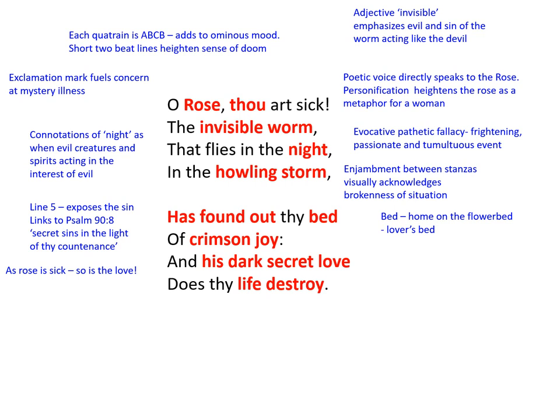In line six, we're told of the 'crimson joy.' And crimson as a colour is so fuelling for us — it's definitely a colour reference in the Old Testament as the colour of sin. It's associated with blood, with shame, with sexual pleasure. The joy that's been infected is crimson joy. Secrecy and shame are mingled, and sin has attacked the core of this person or this rose.